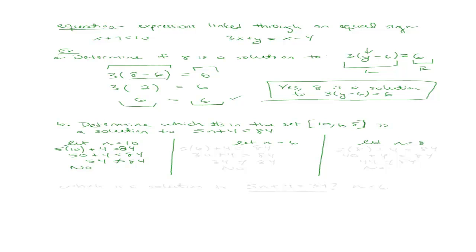Now let's let n equal 6. 5 times 6 plus 4 equals 84. 5 times 6 is 30. 30 plus 4 is 34. Since 34 is not equal to 84, then n equal to 6 is not a solution either. So let's try the last one.